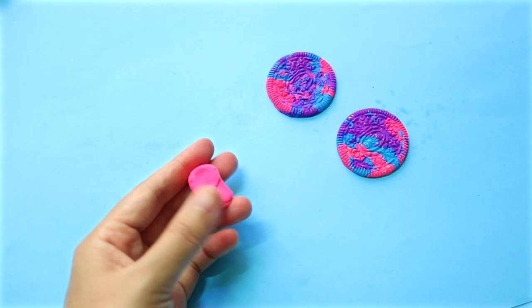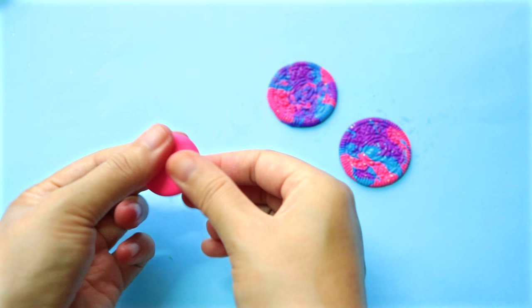To make the cream filling, I'm using some pink clay. Start by rolling it into a ball and then press it down to flatten it a little until you end up with a dish like this.